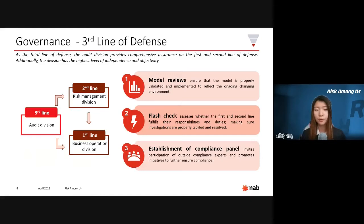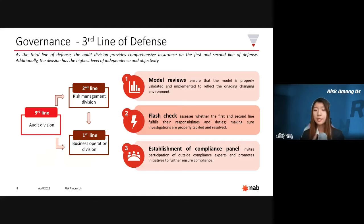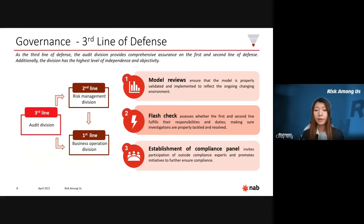Essential tasks the Internal Audit Division should perform include: first, regularly reviewing risk models to ensure they are properly validated and implemented to reflect the ongoing changing environment. Second, conducting flash checks to assess whether the first and second lines of defense are fulfilling their responsibilities and that investigations are properly handled. Lastly, the Internal Audit Division should establish a panel of compliance, inviting outside experts to participate, promoting initiatives to further ensure the bank's compliance with current regulations.